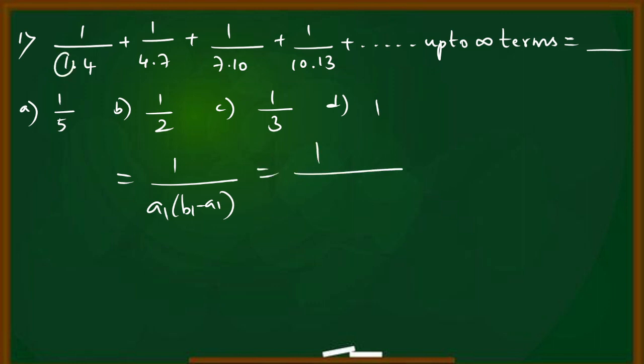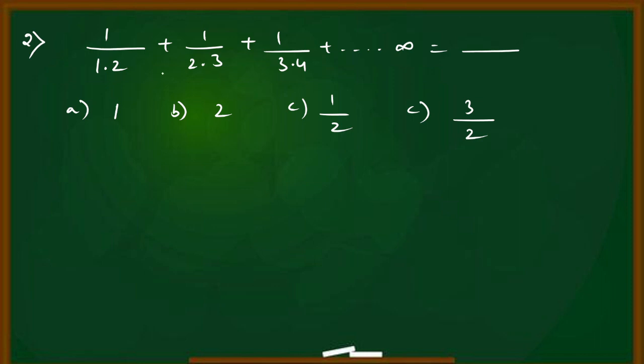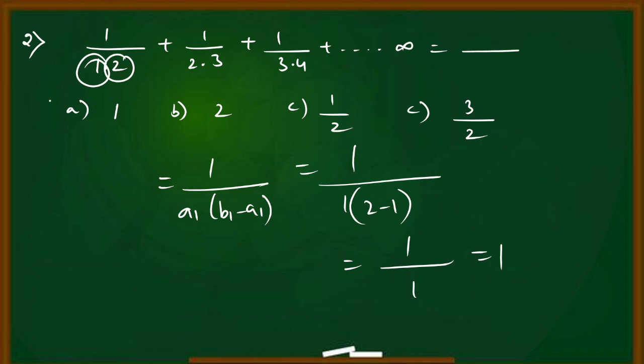Example: 1/(1×4) + 1/(2×7) + 1/(3×10) up to infinity. Using the formula 1/[A1×(B1-A1)], where A1 is 1 and B1 is 4, we get 1/[1×(4-1)] = 1/3. Option C is the answer. Second example: 1/(1×2) + 1/(2×3) + 1/(3×4). A1 is 1, B1 is 2, so 1/[1×(2-1)] = 1/1 = 1.